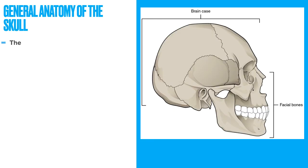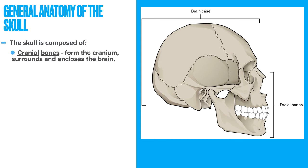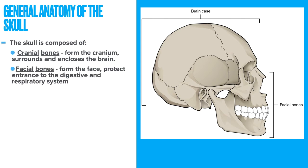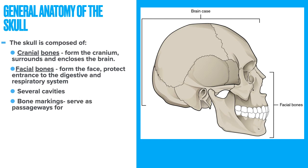The skull is basically composed of cranial bones — these are the bones that form the cranium which surrounds and encloses the brain. The skull also contains facial bones which form the face; they protect the entrance to the digestive system and the respiratory system. The skull also includes several cavities and many bone markings that serve as passageways for nerves and blood vessels, as well as attachment sites for ligaments and muscles.